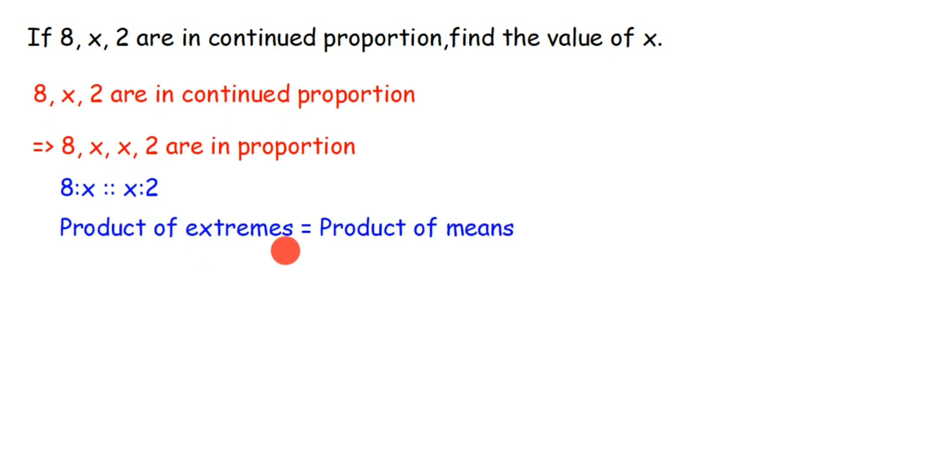Now, what are extremes here? In the proportion, the last two terms are called extremes and the middle two terms are called means. So product of extremes is equal to product of means. Product means we have to multiply these two terms. When we multiply the extremes, that is 8 and 2, this 8 times 2 is equal to product of means.